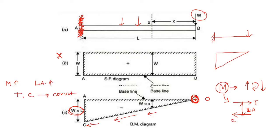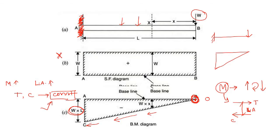Now let's say we are using a material that has constant strength, for example concrete. In the case of concrete, if we have constant strength, we cannot increase its tensile or compressive capacity — it has some fixed capacity. What we can do is simply increase the lever arm to cater for the increased bending moment.